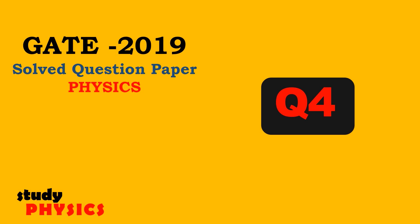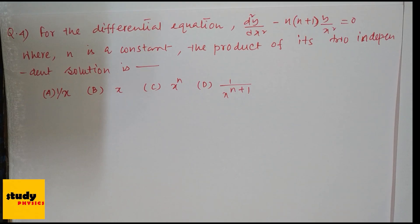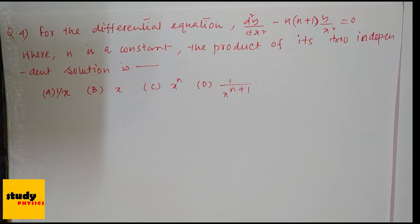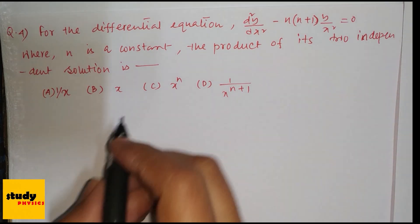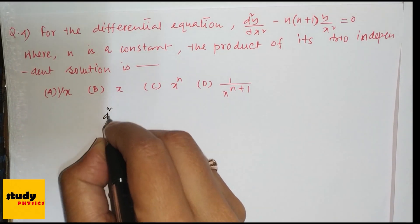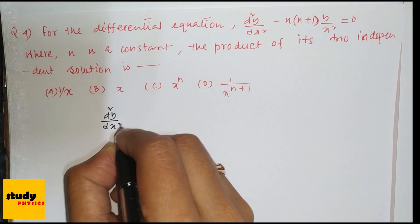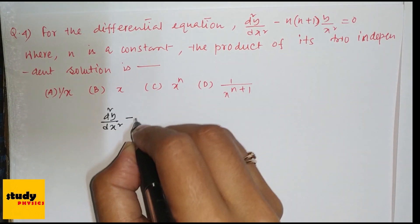Hi everyone, welcome to Study Physics. Here is question 4, which is for the differential equation: d²y/dx² minus n(n+1)y/x² = 0, where n is a constant. The question asks for the product of its two independent solutions.